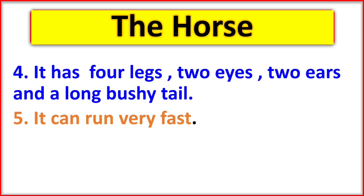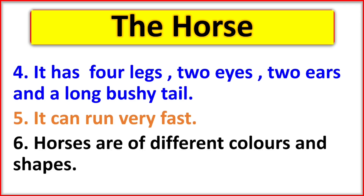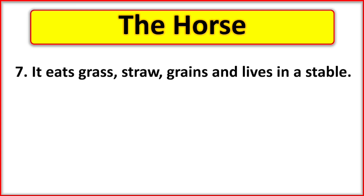It can run very fast. Horses are of different colors and shapes. It eats grass, straw, grains, and leaves, and lives in a stable.